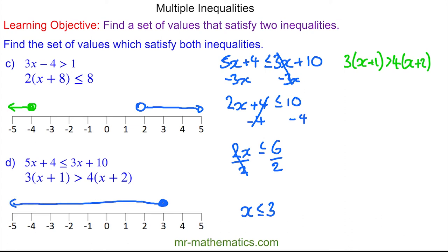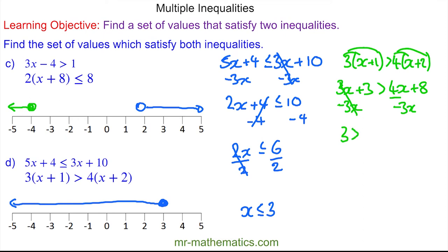For the next one we'll expand both pairs of brackets, so we have 3x plus 3 is greater than 4x plus 8. We'll take away 3x from both sides because there are more x's on that side, and these will cancel, so 3 is greater than x plus 8. Making x the subject: if negative 5 is greater than x, then x must be less than negative 5. So we have a hollow circle at negative 5 going to the left.